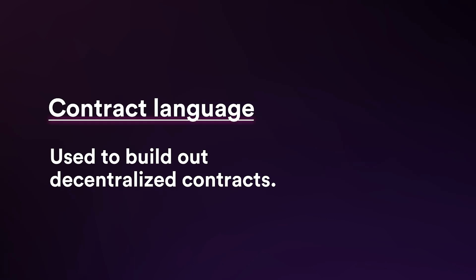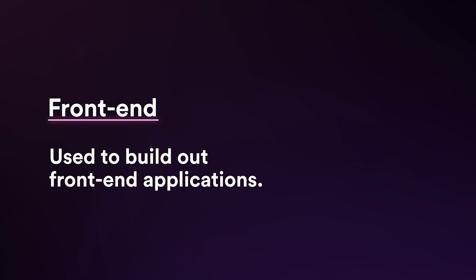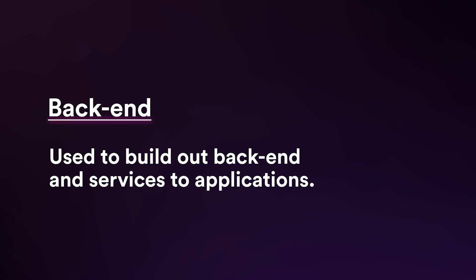The first category is contract languages, which you're going to use to build out decentralized contracts. Those are used to execute code on decentralized systems, and it's specific to which chain you want to deploy on. The second category is front-end applications, with languages that are fairly consistent across apps. And the last piece is back-end and services, where there are several language options that integrate easily with Web3.